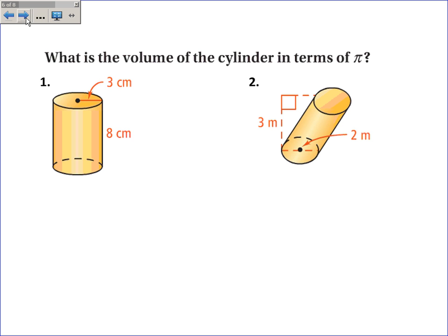The volume of this cylinder in terms of pi, the volume is pi r squared h. So the radius is 3, and the height is 8. Now leaving it in terms of pi, I will just forget about the pi. And it will be 72 pi centimeters cubed.